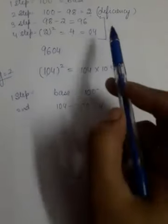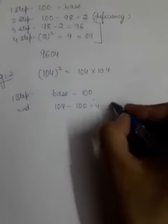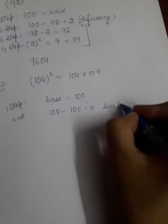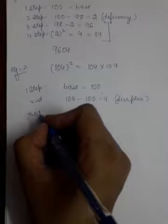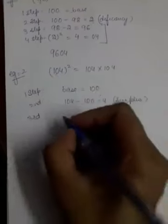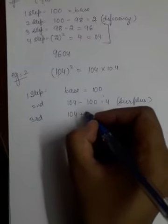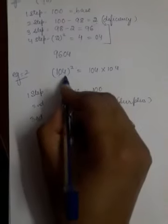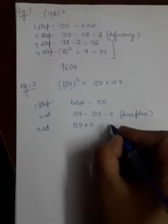There we got deficiency, here we get surplus. We call it as surplus. Now third step, what is the third step? You will add this surplus to 104. When you get surplus you will add. When you will get deficiency you will minus. So it will be 108.